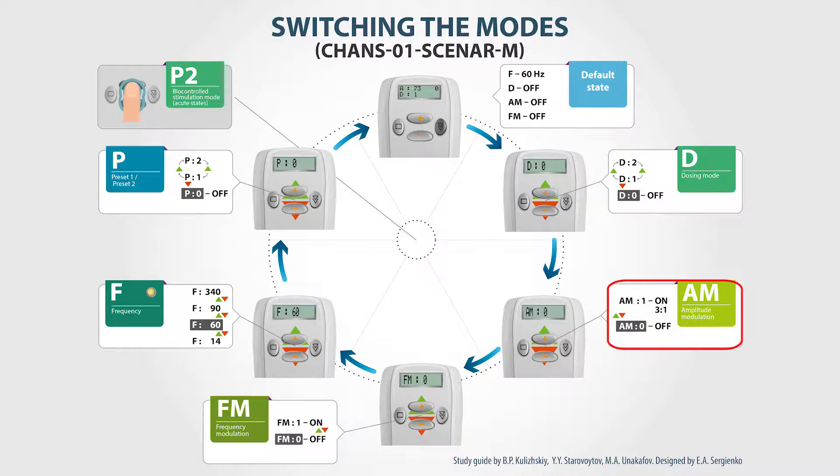The next mode is 3 to 1 amplitude modulation. Again, 1 means on, 0 means off. The same logic applies for the frequency modulation.